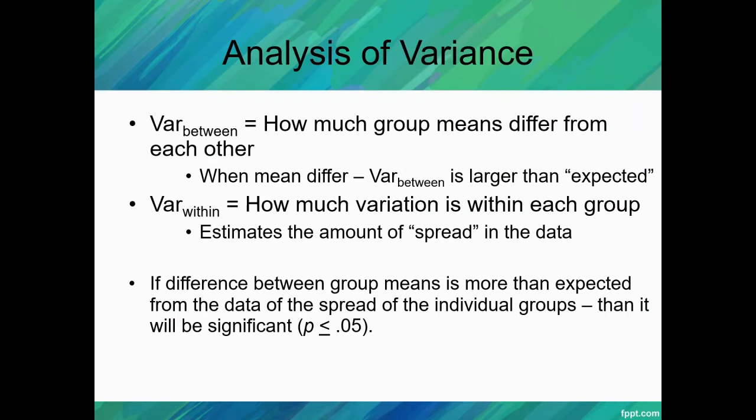Now remember, when we're doing an ANOVA you want to have a dependent variable that's continuous and an independent variable that is categorical, and the independent variable typically has three or more groups or levels. Ultimately we're seeking to find out if the difference between the group means is more than expected from the data of the spread of the individual groups. If that's the case, then our ANOVA would be significant, meaning there are significant differences in the groups.